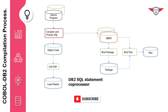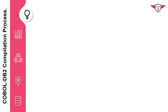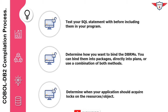Here are some important programming tips when writing a COBOL DB2 program. Tip one: test your SQL statements before including them in your COBOL DB2 program — you can use either SPUFI or QMF. Tip two: determine how you are going to bind the DBRMs, either into a package or directly into a plan. Tip three: determine when your application should acquire locks on resources or on an object.